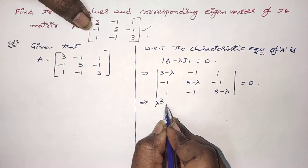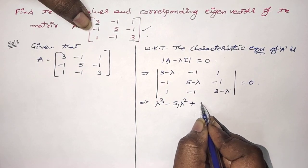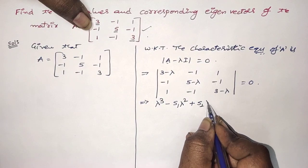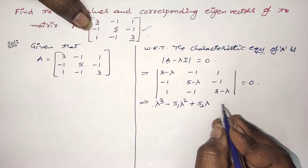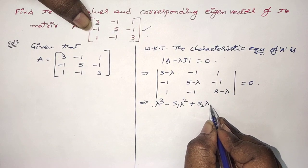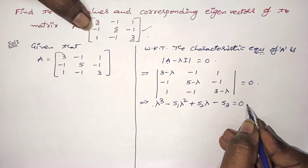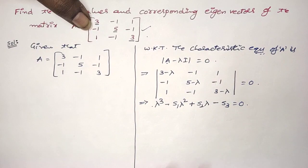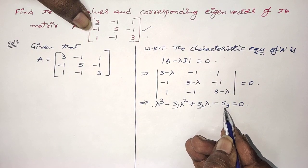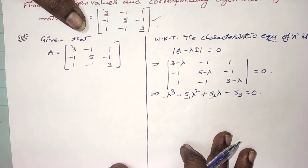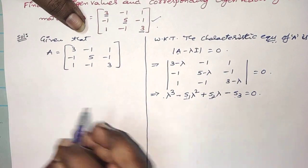The shortcut formula is: lambda cubed minus S1 times lambda squared plus S2 times lambda minus S3 is equal to 0. We have to find out S1, S2, and S3 from the given matrix.